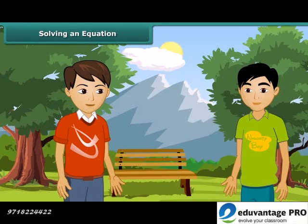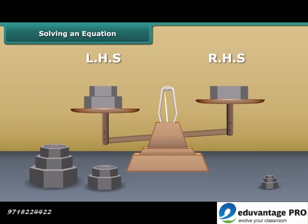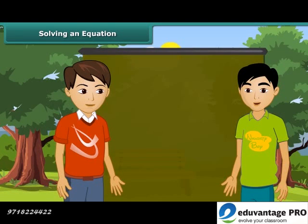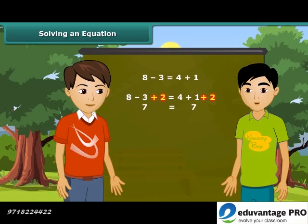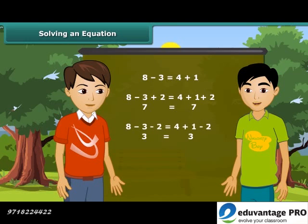How do we solve an equation? A balanced equation is like a weighing balance with equal weights on both its pans. If we add the same weights to both pans, the arm remains horizontal. Similarly, if we remove the same weights from both pans, the arm remains horizontal. Same is the case with equations. If we add, subtract, multiply, or divide the same amount on both sides, the equation remains unchanged.